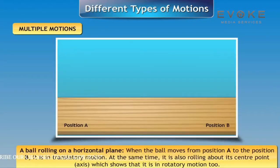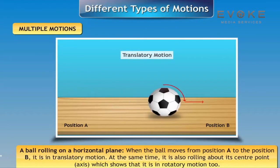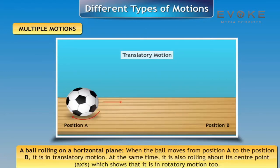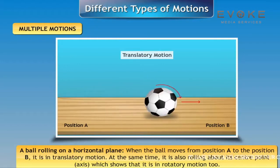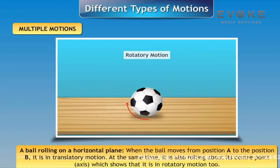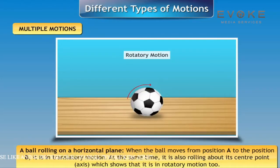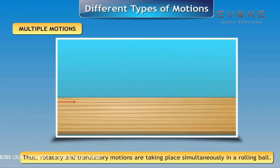For example, a ball rolling on a horizontal plane: when the ball moves from position A to position B, it is in translatory motion. At the same time, it is also rolling about its center point axis, which shows it is in rotatory motion. Thus, rotatory and translatory motions are taking place simultaneously in a rolling ball.